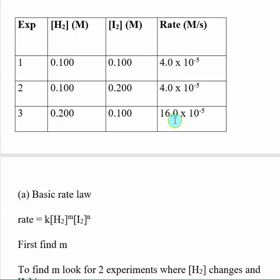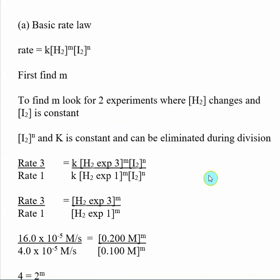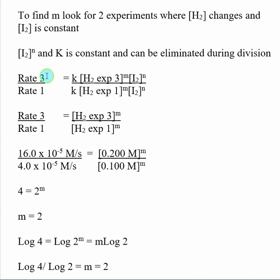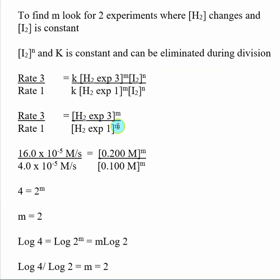Setting up the rate law expression for both experiments and dividing them, K cancels because it is constant in both, and the concentration of iodine is exactly the same so that cancels too. This equation simplifies so that rate three divided by rate one equals the concentration of hydrogen in experiment three divided by the concentration of hydrogen in experiment one, both raised to the exponent M.